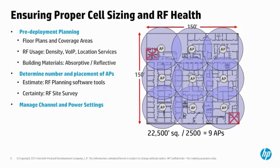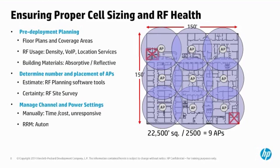You could opt to manually configure the HP Unified Access Controller with channel and power settings for each AP, but this is rarely a good idea. It is not only time-consuming, it is rarely as effective as simply relying on HP's radio resource management features. If you've accurately placed APs during the deployment phase, you have ensured the success of these RRM features. Let's look at some of these features now.